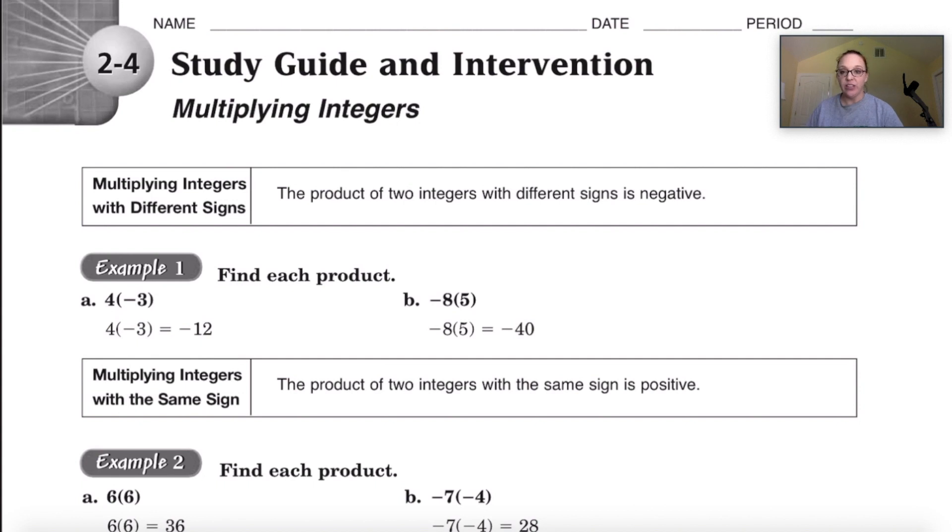This is the multiplying integers lesson. We have some instructions here at the top that tell us how to multiply integers. The gist of that is if they have different signs then your answer is going to be negative, and if they have the same sign then your answer is going to be positive.